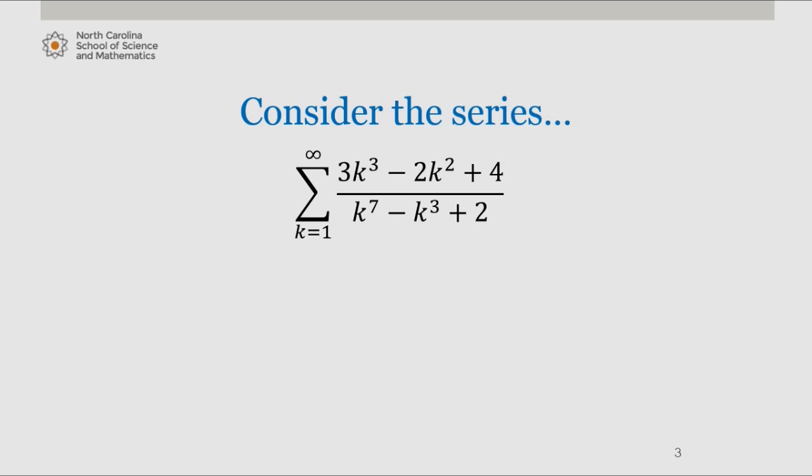We note that as k approaches infinity, the behavior of the numerator will be determined by the leading term 3k cubed. Similarly, the behavior of the denominator will be determined by the term k to the seventh. So our series will behave like the series 3k to the third over k to the seventh in the long term, so that's probably a good choice for us to use.